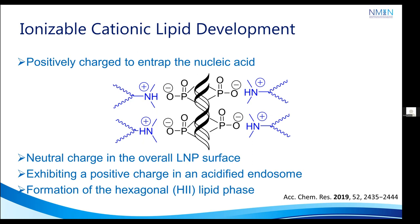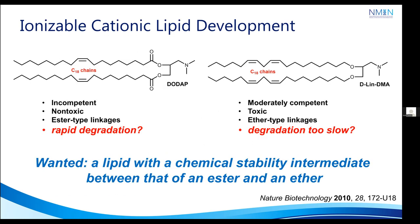Two examples of cationic lipids are introduced: DODAP on the left and DLIN-DMA on the right. Among them, DODAP is not competent because it is degraded so rapidly — presumably the ester group is hydrolyzed rapidly in vivo — whereas DLIN-DMA is toxic because it is essentially degraded so slowly, and that is bad news for the animals.